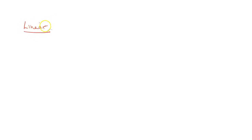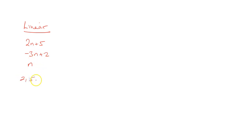Looking at nonlinear sequences, the first thing to do is look at the different types. Starting with the difference between linear and nonlinear: a linear sequence might be something like 2n plus 5, minus 3n plus 2, or just n. These are all linear sequences — they involve a single power of n. A sequence like this might look like 2, 5, 8, 11, etc., where the constant difference is 3.